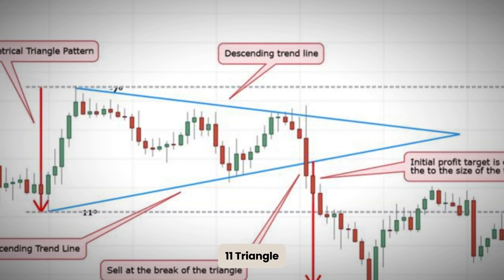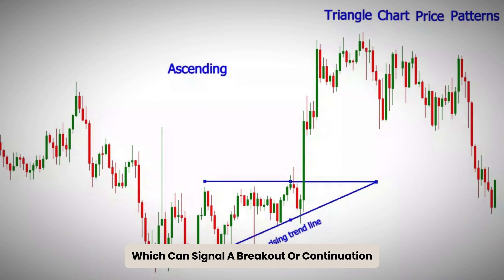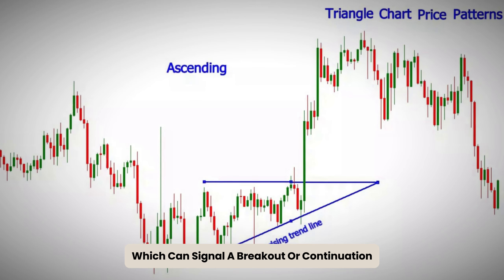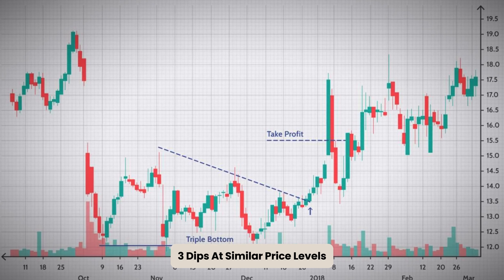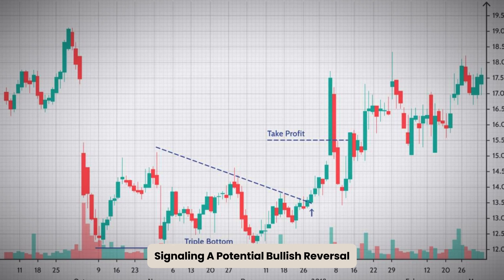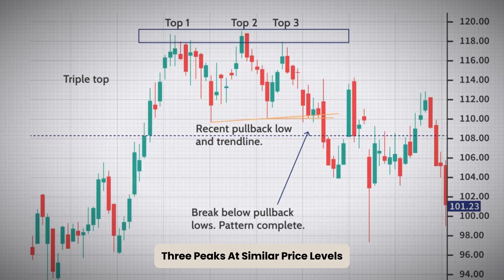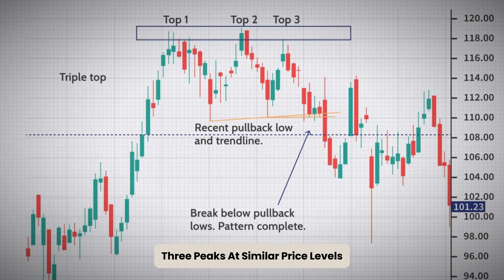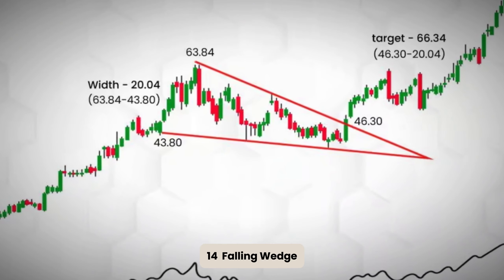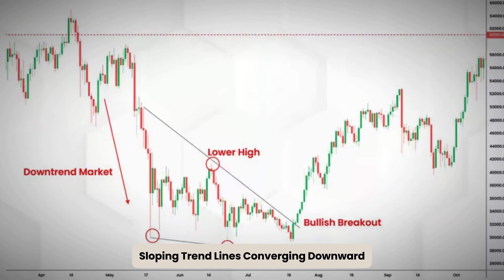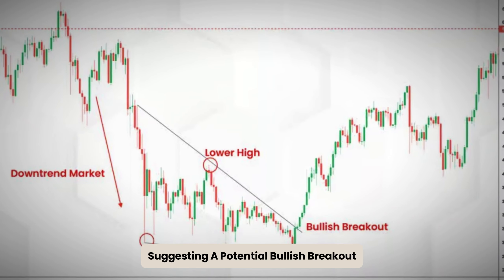11. Triangle: Converging trend lines forming a triangle, which can signal a breakout or continuation. 12. Triple Bottom: Three dips at similar price levels, signaling a potential bullish reversal. 13. Triple Top: Three peaks at similar price levels, indicating a potential bearish reversal.